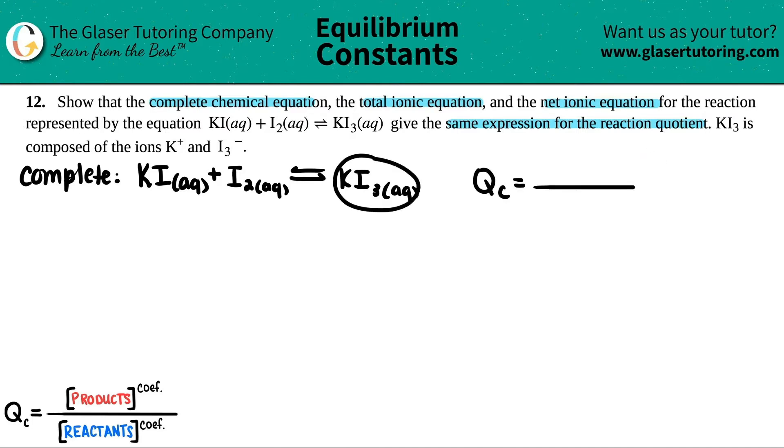And we always have to take those values and raise them to the coefficients. So for this one, I'm going to say that the QC would equal something over something else. And maybe I'm just going to get rid of this because now we know that it is a Q value. And products is this, reactants is this. Now, the first thing that I do is I just like to run through the states just to see if there are any states that are not allowed to be in this equation.